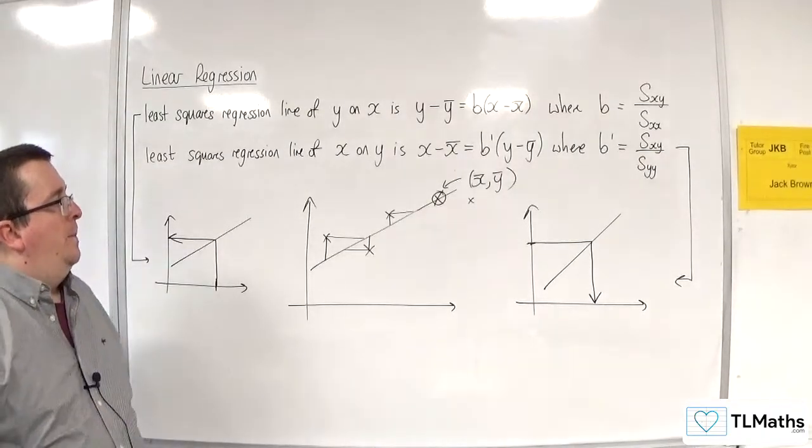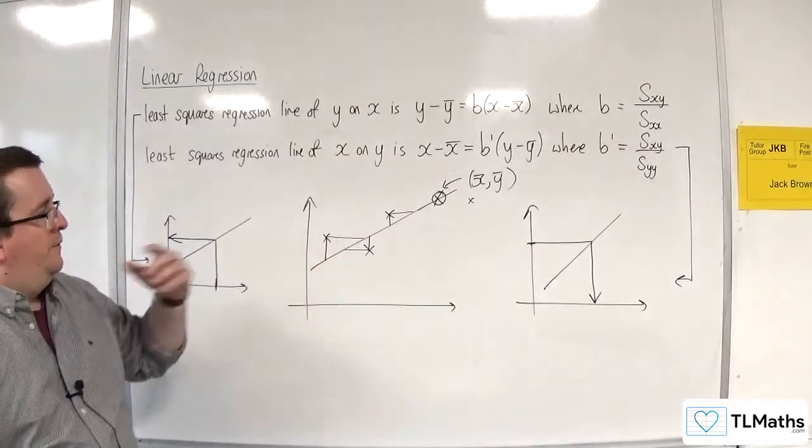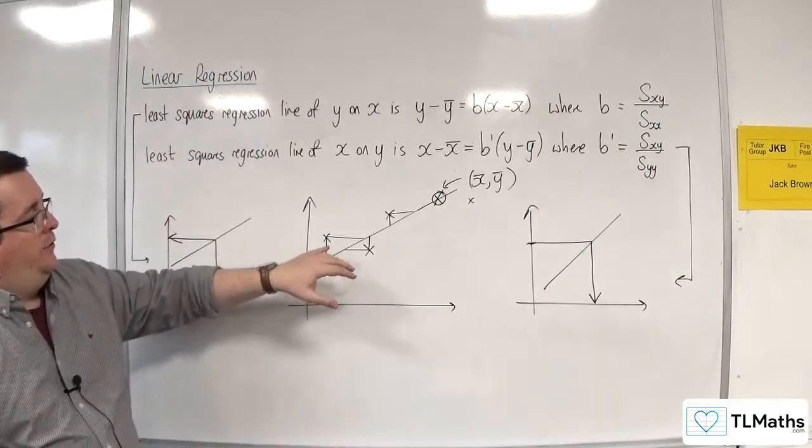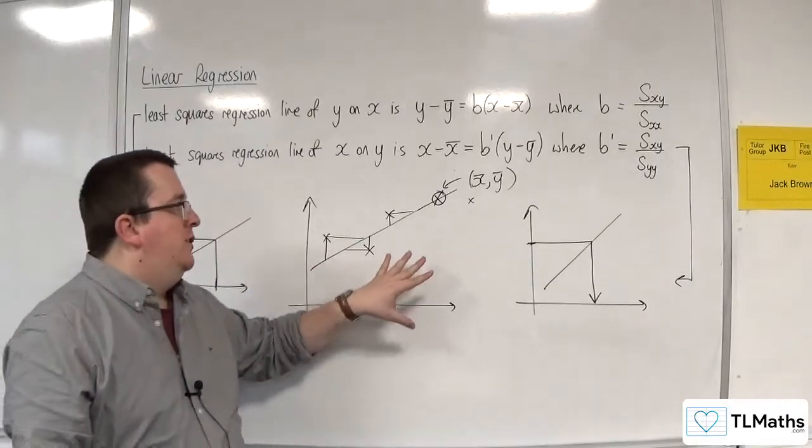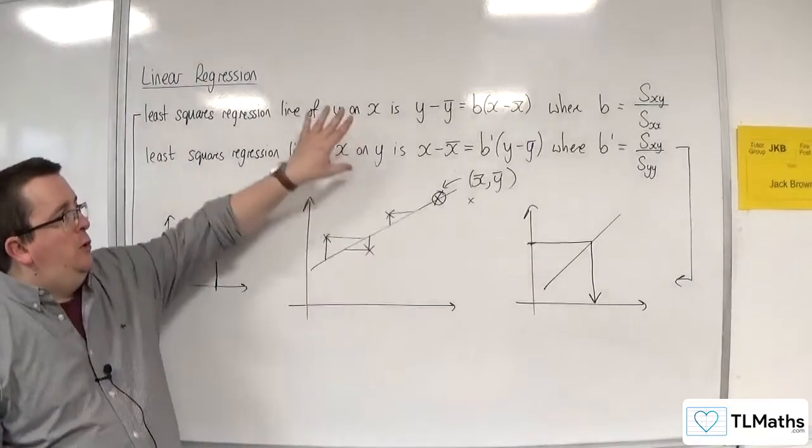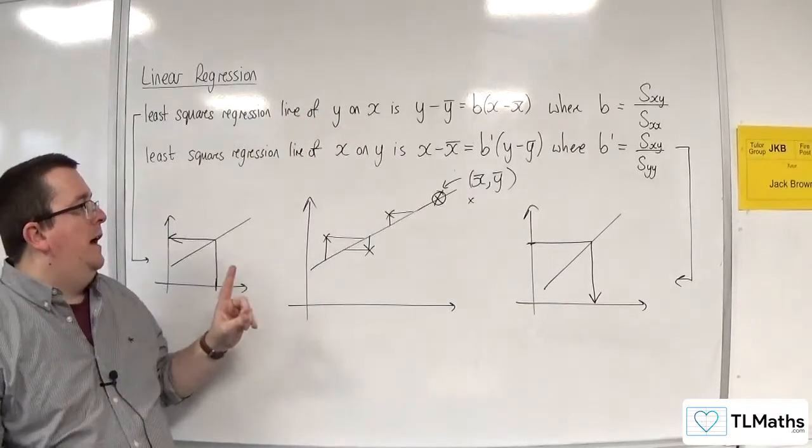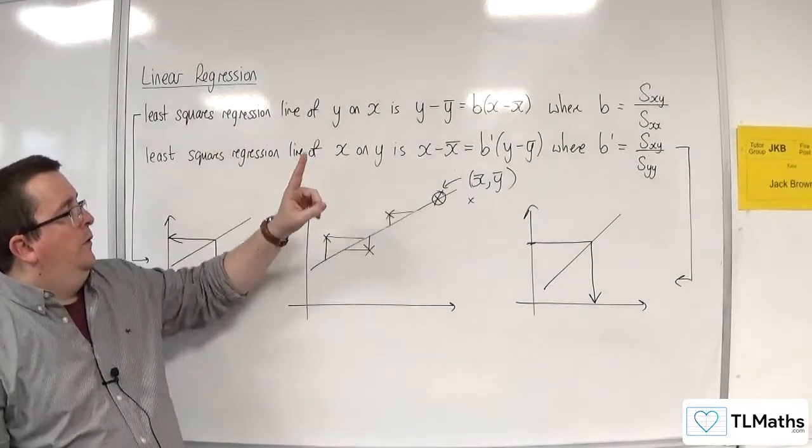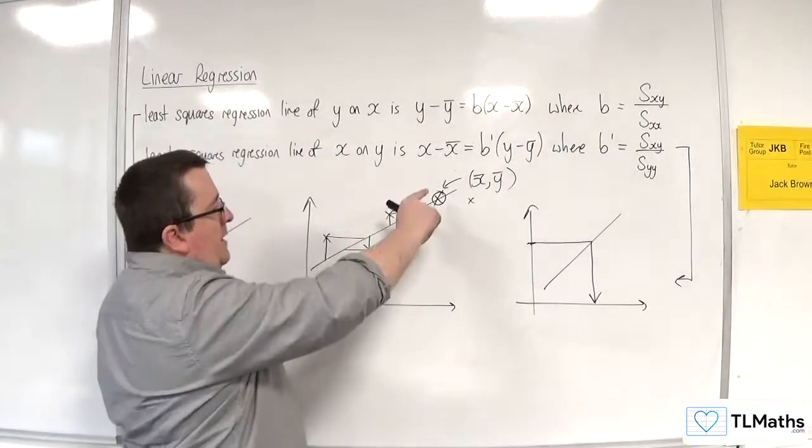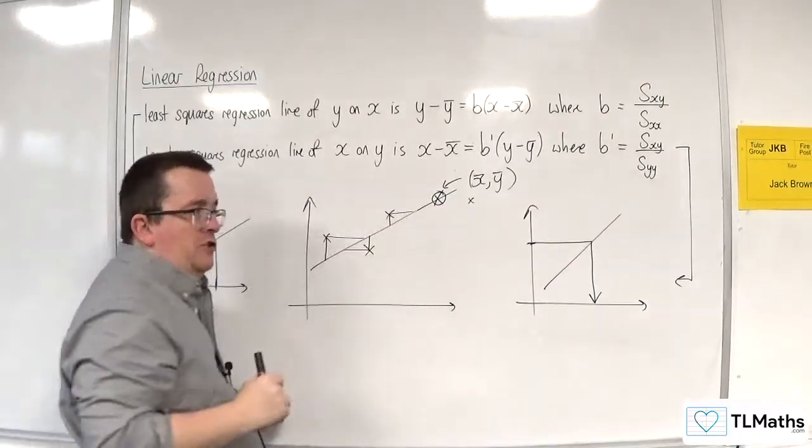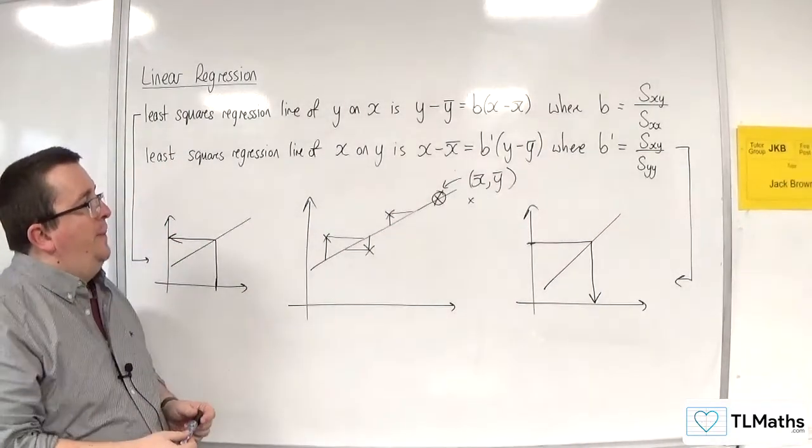Just to be clear on this graph, I'm thinking about the way I've drawn it. Don't get misled into thinking the two lines give you the same equation because they don't. The way I've drawn this makes it out as if those two lines are going to be the same when they're not.